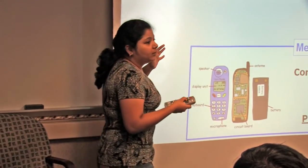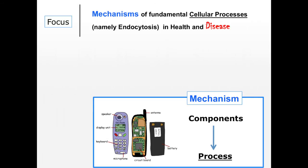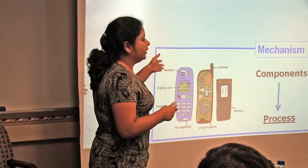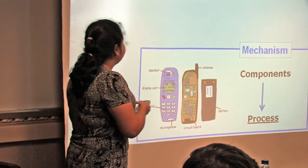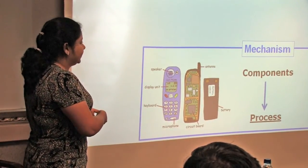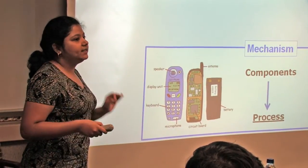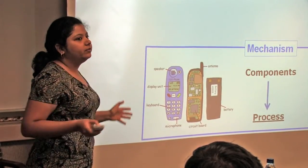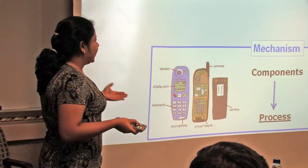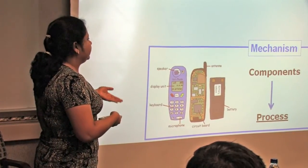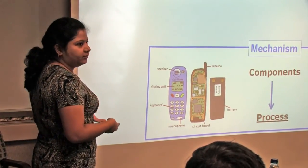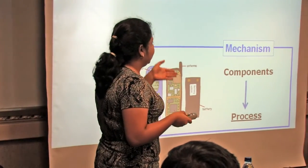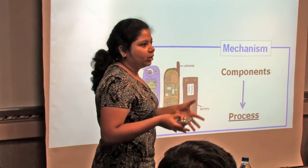Let me give you a very simple and naive example. Take a phone. In order for a phone to function, all its components are not equally important. For example, if we remove the plastic cover of the phone, the phone will still function. However, if we remove the battery, the phone will not function anymore. That is how we know that the battery is more important than the plastic cover, and this is almost exactly how we do cell biology.